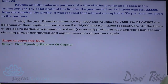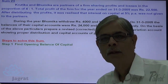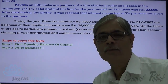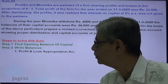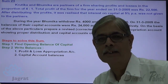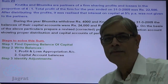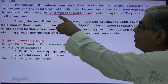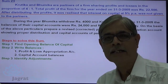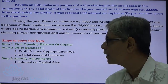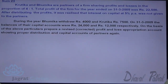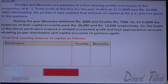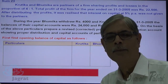We shall prepare the profit and loss appropriation account and capital accounts once again. Steps to solve the sum: Step 1 — find the opening balance of the capital account. Step 2 — write the opening balance of capital account in the capital accounts. Then write the balance of net profit in the profit and loss appropriation account. Write the capital balance as opening capital in the capital account. Identify the adjustment that was omitted — the 5% interest on capital — and then distribute the profit.